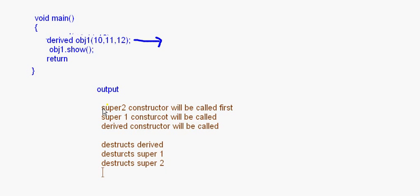So you have to understand that whenever we have a superclass and a derived class, the superclass constructor will always be called first and then the derived class constructor is called. In the case of a destructor, it destructs the derived class object first and then moves upwards. Constructor order is top to bottom; destructor order is bottom to top. With that, we come to the end of the topic on constructors and multiple inheritance.